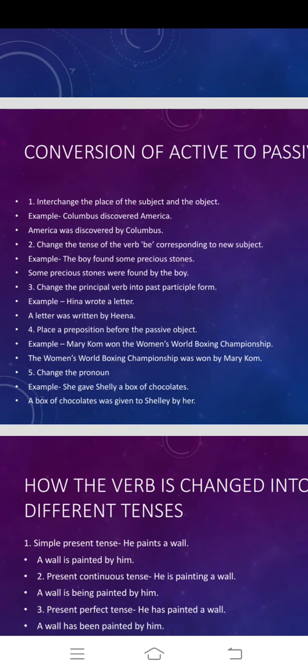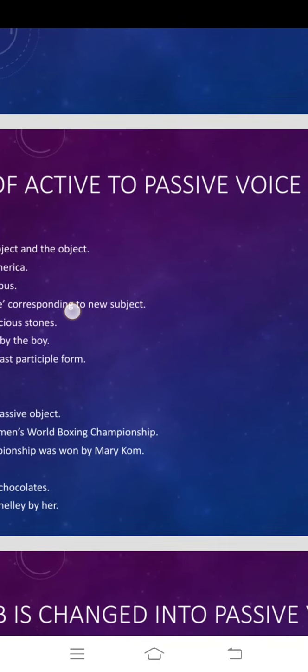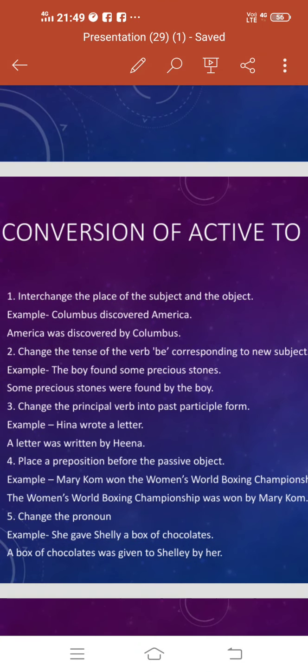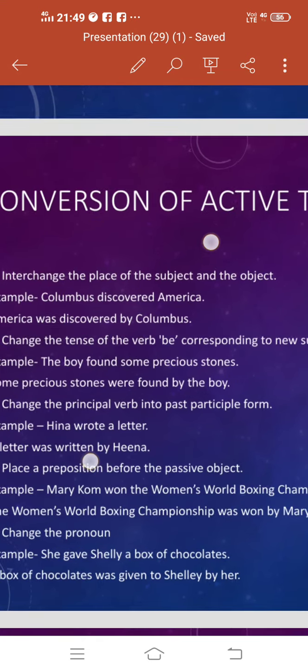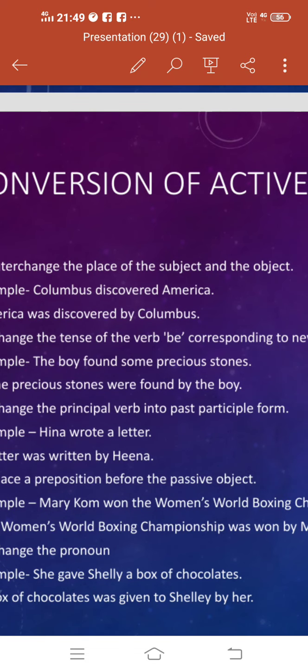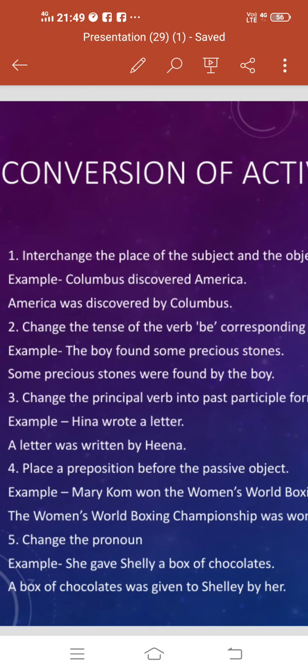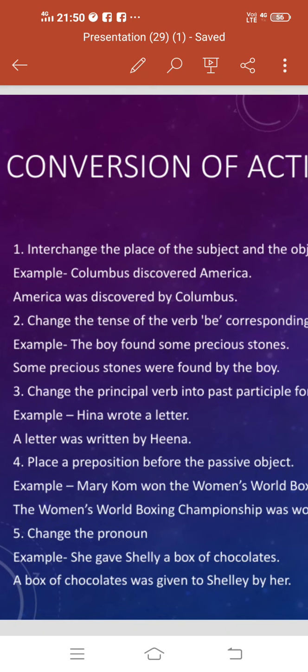Now let me discuss with you the conversion of active to passive voice — how we can convert sentences in active voice into passive voice. Number one is interchange the place of the subject and the object. This is very important. Whenever we have to change a voice from active to passive, we need to change the subject and bring it to the place of the object, and the object has to be brought in the place of the subject. A sentence contains a subject, verb, and predicate — predicate is also known as object.